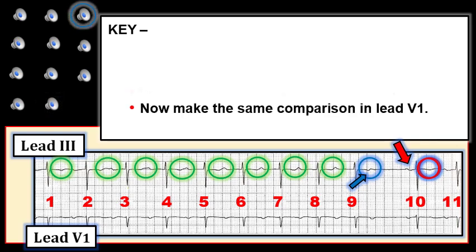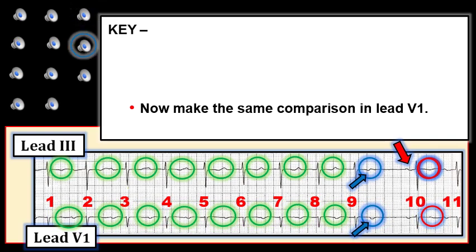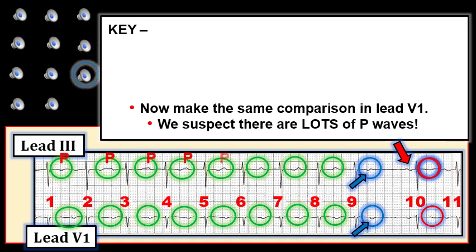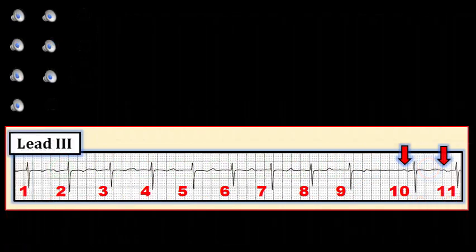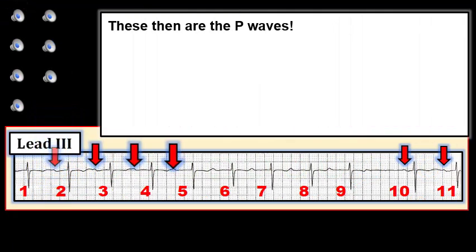Now make the same comparison in lead V1. The T wave of beat number 10 in lead V1 is again flat. The ST-T wave of virtually all the other beats in this bottom tracing manifest a small negative notch, with slight variation in the timing of this notch. We suspect that there are lots of P waves on this tracing. These then are the P waves — it makes perfect sense, since the atrial rhythm is perfectly regular.